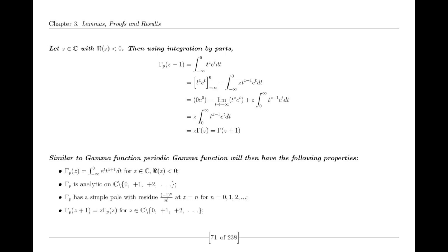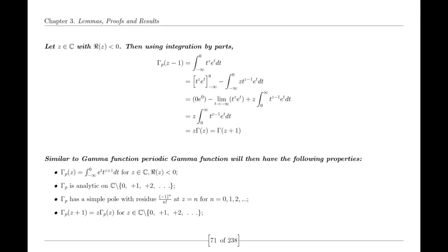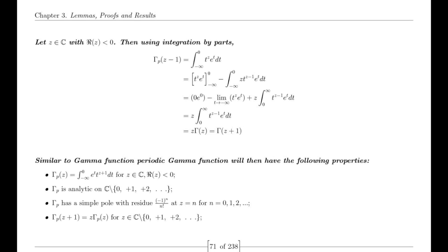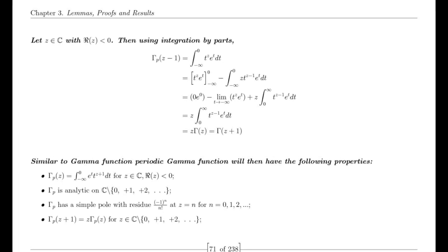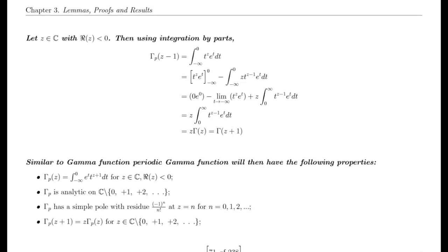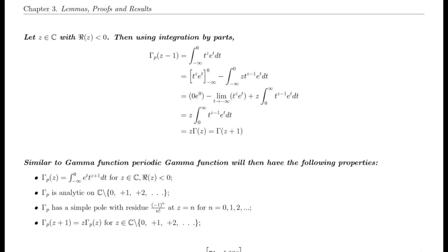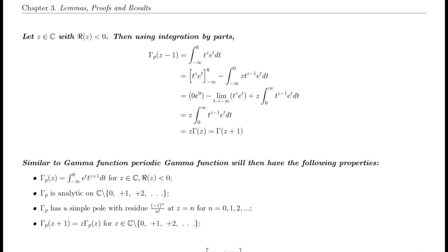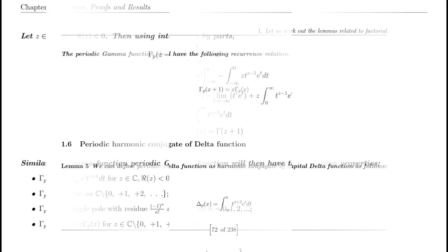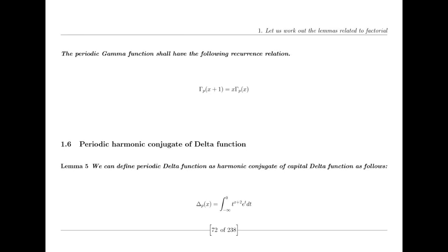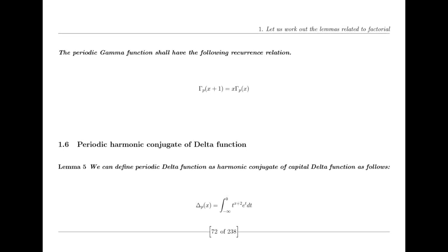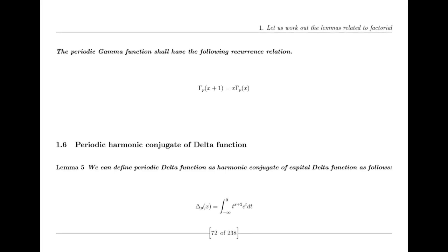History is replete with examples where significant breakthroughs were achieved not by direct attack on a problem, but by exploring related functions or objects. For example, the relationship between the sine and cosine functions, which are harmonic conjugates, is essential for understanding Fourier analysis. Similarly, the discovery of the analytic continuation and functional equation of the Riemann zeta function itself was a step away from its original definition, leading to deeper insights.